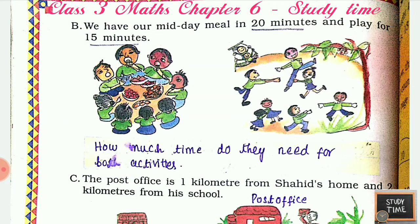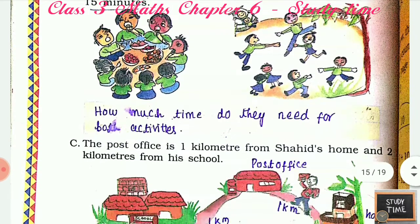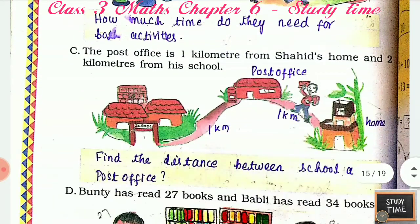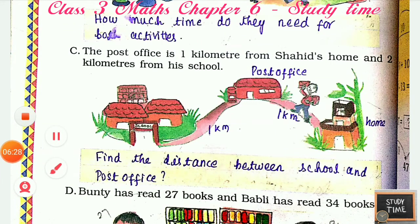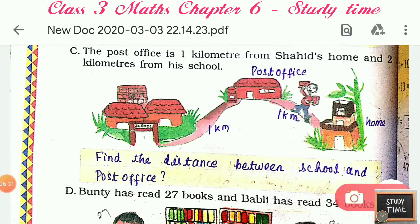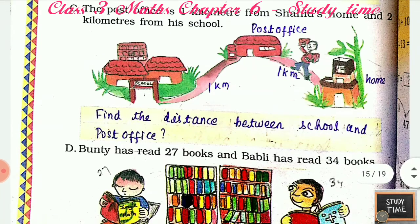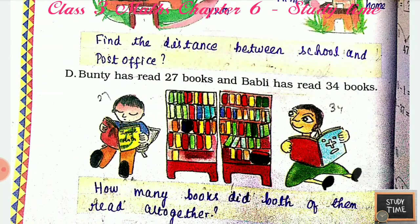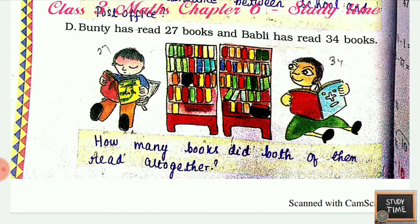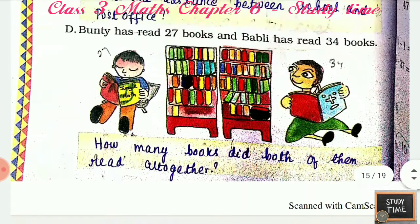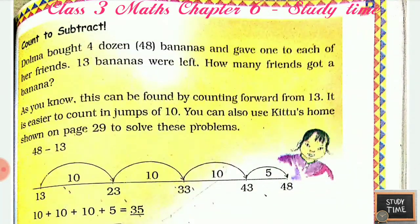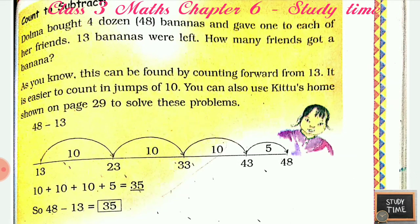We have our midday meal in 20 minutes and play for 15 minutes — how much time do they need for both activities? The post office is one kilometer from Shahid's home and two kilometers from his school. Find the distance between the school and the post office. Also: Bunty has read 27 books and Bubbly has read 34 books — how many books did both of them read altogether? You have to add for that.